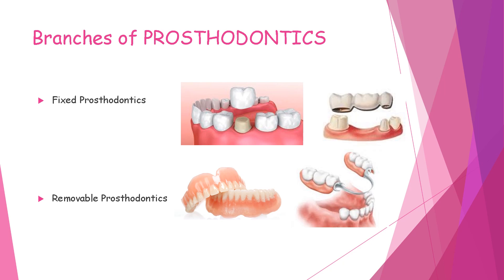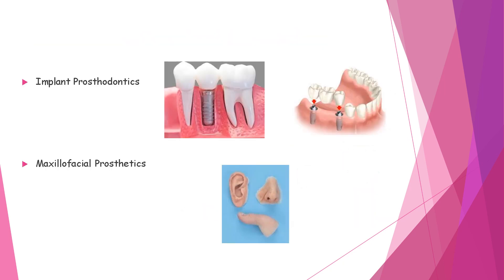There are various options in prosthodontics for the rehabilitation of missing teeth, which is one of the main objectives of every prosthodontist. The various branches are: fixed prosthodontics, which includes crowns, bridges, inlays, onlays, etc. Then removable prosthodontics, which is further divided into complete denture prosthodontics and removable partial denture prosthodontics. The next branch is implant prosthodontics, where implants are used for rehabilitation of missing teeth. The fourth branch is maxillofacial prosthodontics, including auricular prosthodontics, nasal prosthodontics, finger prosthodontics, obturators, etc.